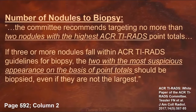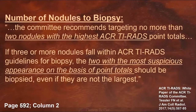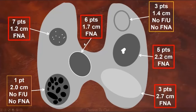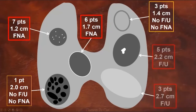Does everyone realize that the committee recommends biopsy a maximum of two nodules? If three or more fall within the ACR TI-RADS guidelines for biopsy, the two with the most suspicious appearance on the basis of point totals should be biopsied, even if they're not the largest. So for a case like this with four nodules that qualify for FNA, these two with the highest point totals would actually be the two you target, and these two would be converted from FNA to follow-up because of their lower point total.